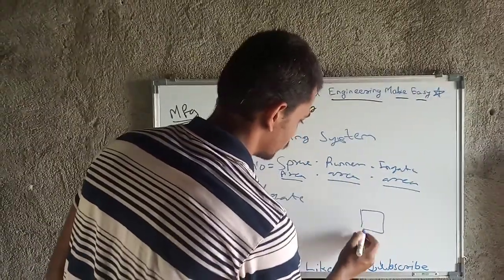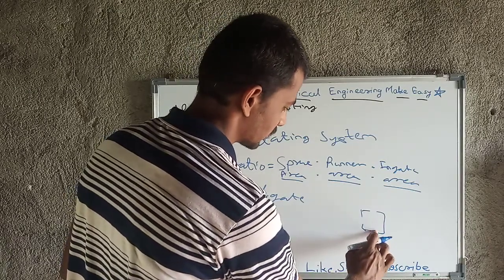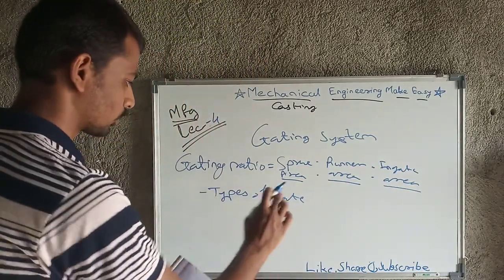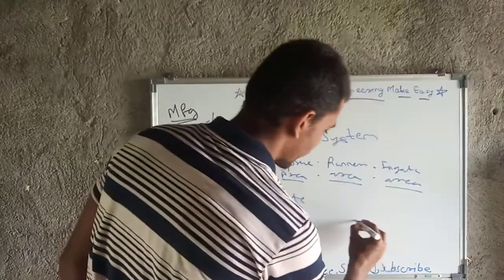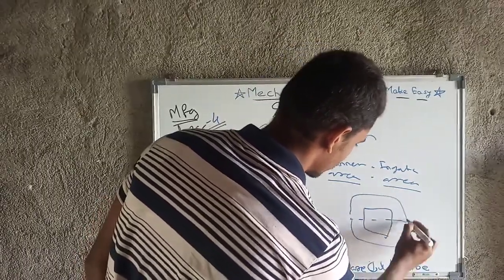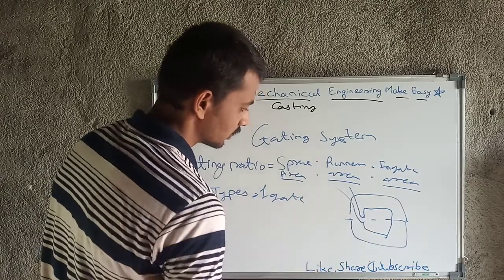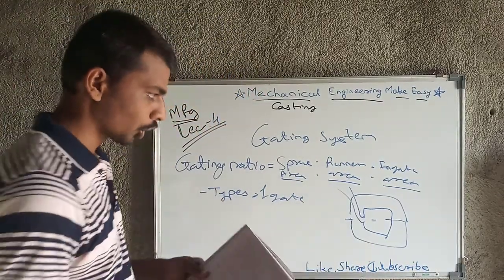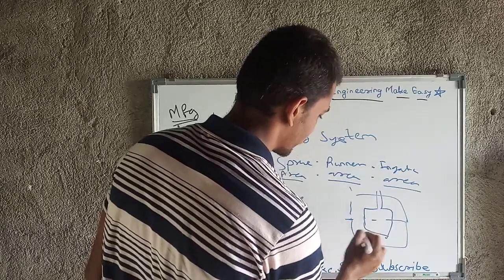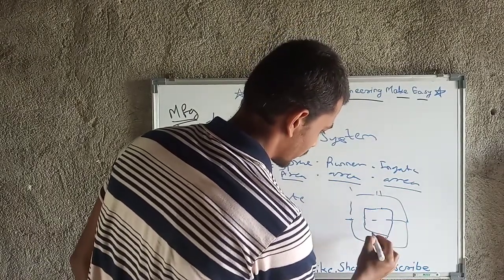Types of gate — the ingate we drew can be placed at different positions. If this is the cavity, the gate may be at the top, at the side, or at the bottom of the cavity. Depending on the position of the ingate, types of gates are defined. Parting line gate means the gate is provided at the parting line between cope and drag. Top gate means the gate is provided at the top of the mold cavity.